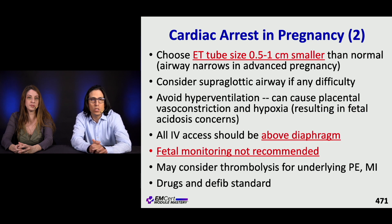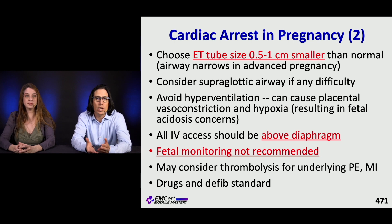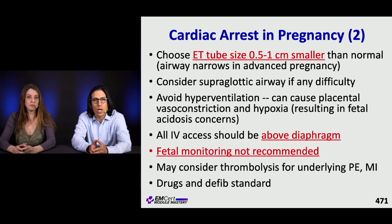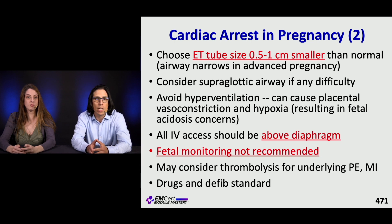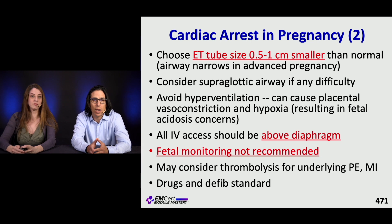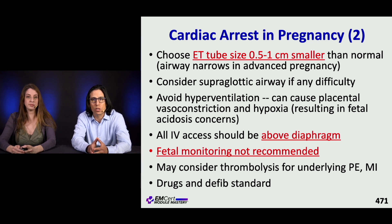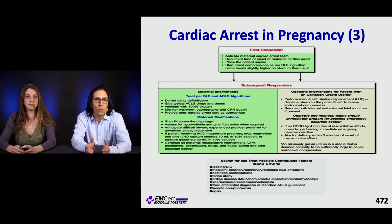For airway management in cardiac arrest in pregnancy, use an ET tube half to one centimeter smaller than normal because the airway narrows and becomes more friable. An LMA or supraglottic airway may serve as a rescue device. Avoid hyperventilation — it can cause placental vasoconstriction and hypoxia, leading to fetal acidosis. All IV access should be above the diaphragm. Fetal monitoring is not recommended during resuscitation — focus on saving the mother. Consider thrombolysis for underlying PE or MI. Drugs and defibrillation are standard per adult ACLS. A flow sheet for cardiac arrest in pregnancy with reversible contributing factors is provided as a reference.